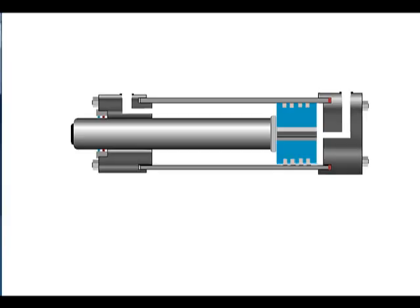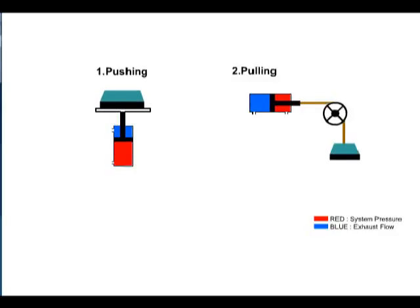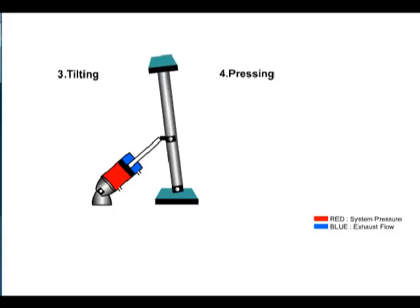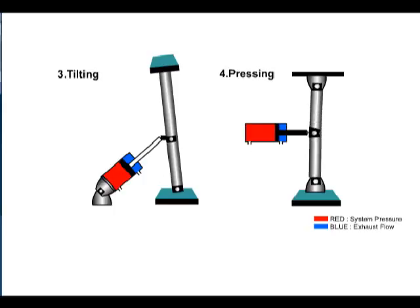Cylinders are linear actuators. Their output force or motion is in a straight line. Their function is to convert hydraulic power into linear mechanical power. Their work applications may include pushing, pulling, tilting and pressing. Cylinder type and design is based on specific applications.